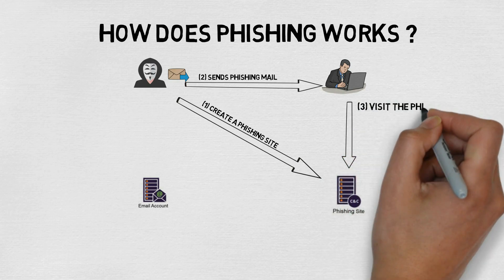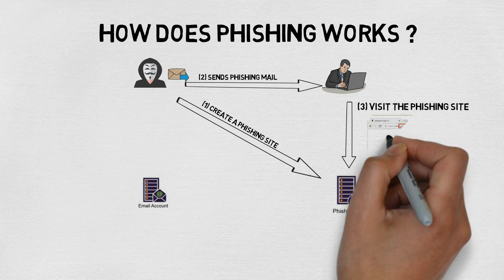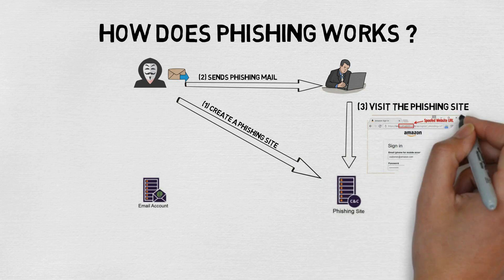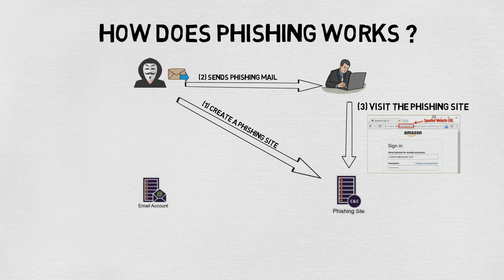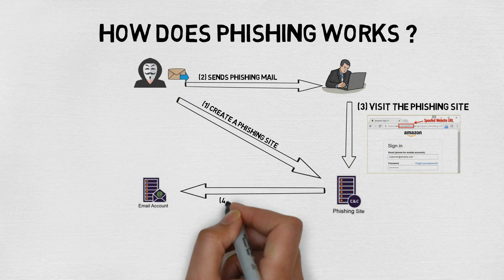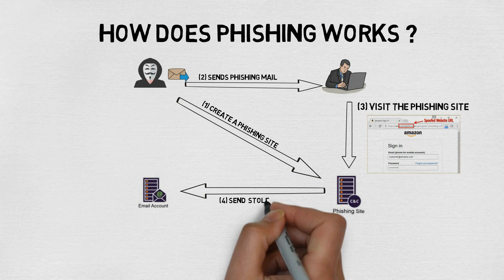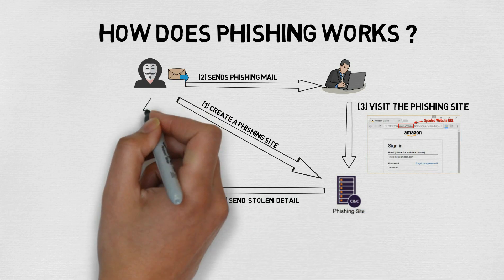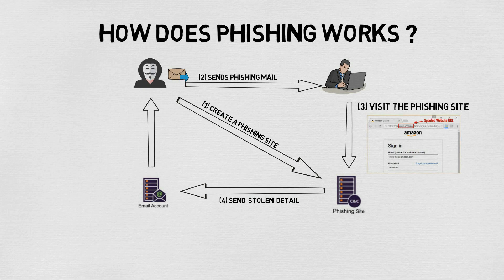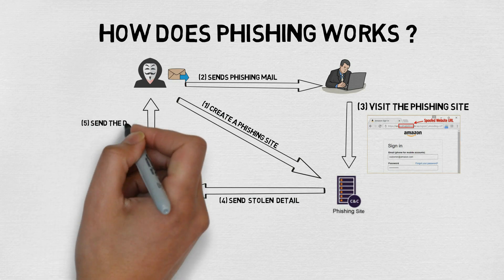The user falls into the phishing trap, lured by the jackpot message, opens the phishing mail, visits the phishing page, and enters their details. The phishing page does not have an HTTPS URL. The phishing kit then processes the credentials and sends them to an external email account, and finally the attacker receives details like bank account number, password, etc.